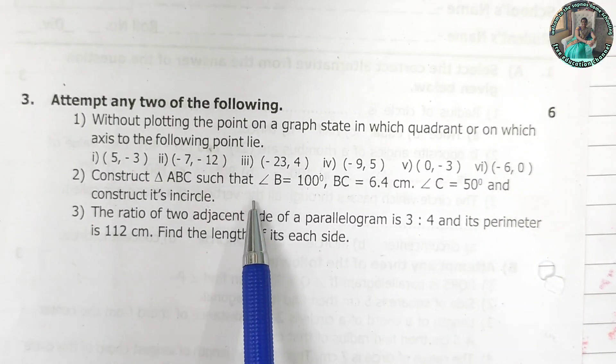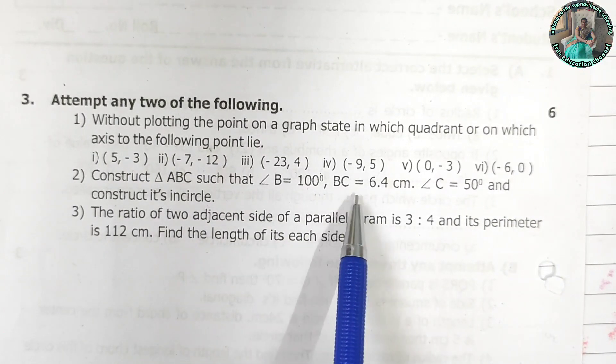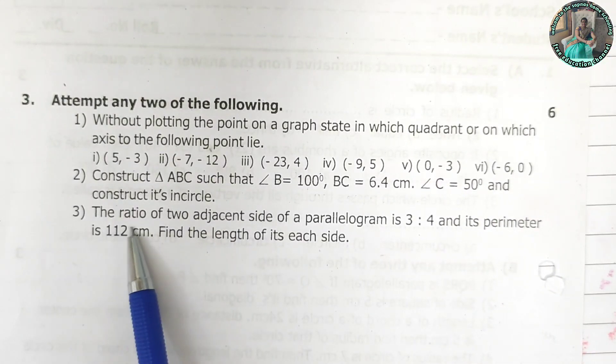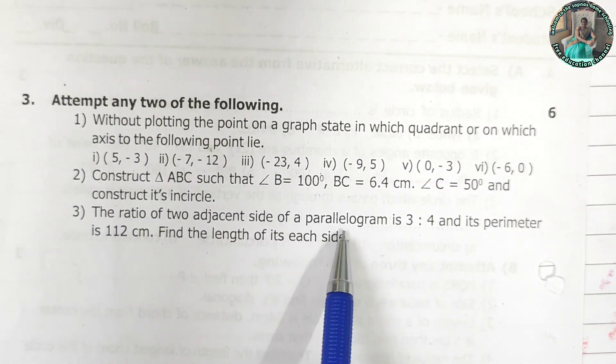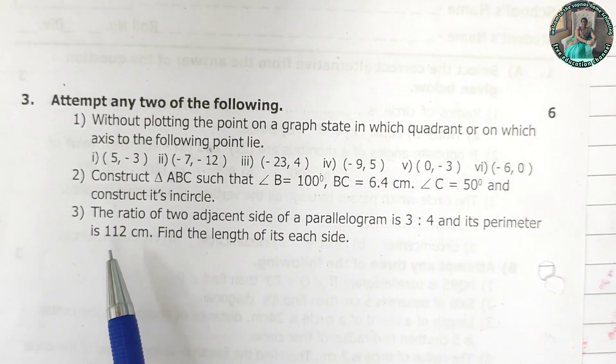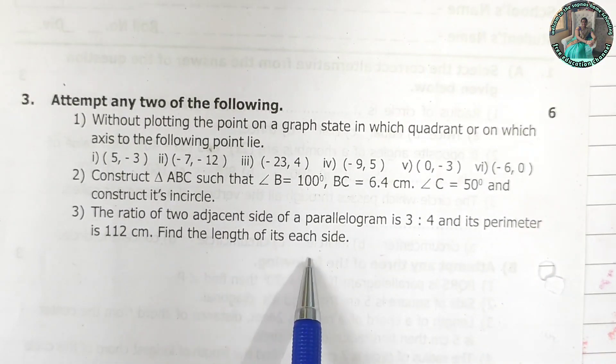Construct triangle ABC such that angle B is 100 degree, BC is 6.4 and angle C is 50 degree and construct its incircle. The ratio of two adjacent sides of a parallelogram is 3 is to 4 and the perimeter is 112 cm. Find the length of each side.